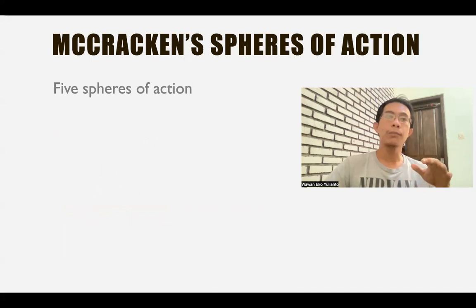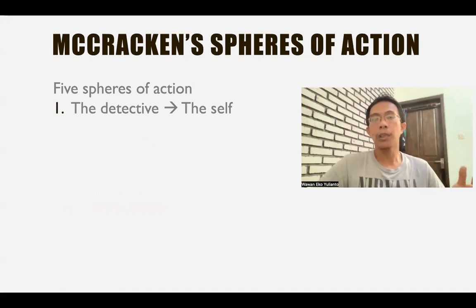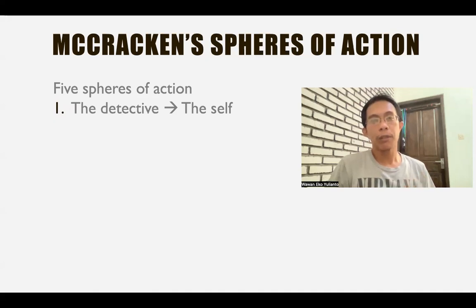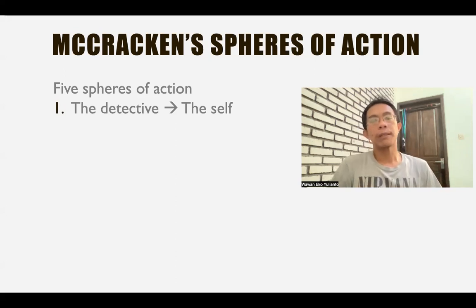Scott McCracken in his book has five spheres of action for all the five figures I mentioned earlier. The first one is the detective — it is usually about the exploration of the character itself. The detective figure in modern detective fiction is usually a unique individual with probably an extraordinary intelligence, or someone who is problematic, but definitely someone who wants to solve the case.